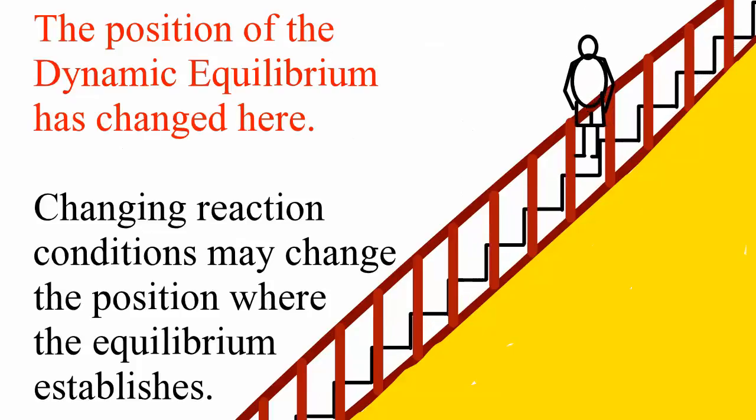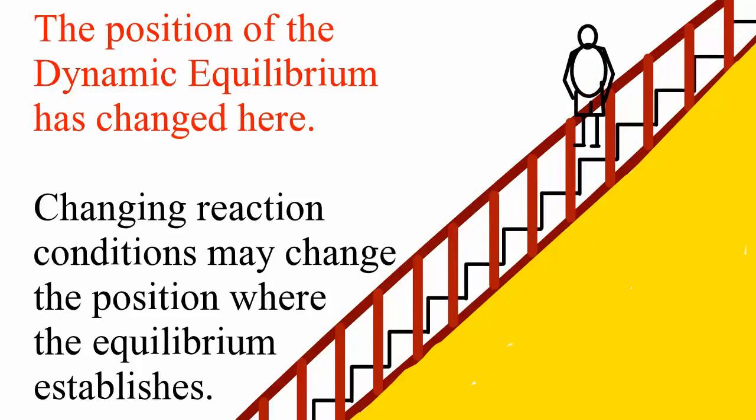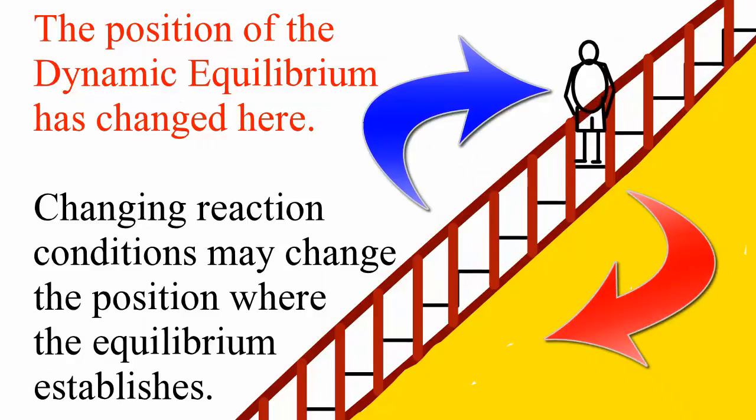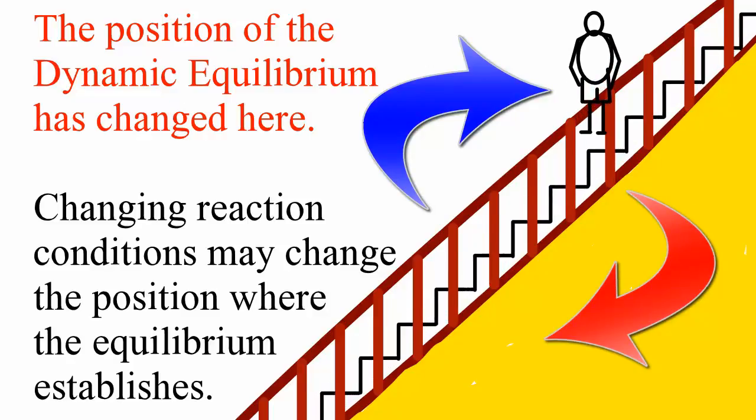So, in conclusion, in any dynamic equilibrium situation one will find two opposing processes that are occurring at the same rate.